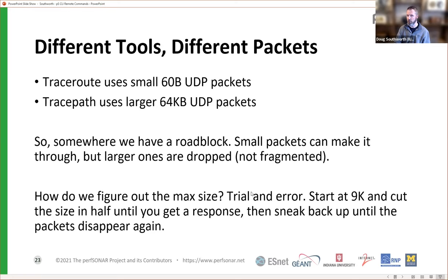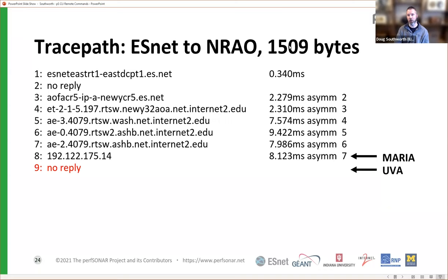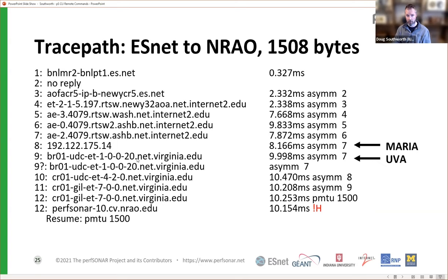How do we figure out where the breakdown is? Using trace path, you can specify the size of the packets you're sending — 64K is the default, but we can try lower and lower packet sizes to see what makes it through. We started at 9000: didn't work. Cut it in half to 4500 and so on. We start sneaking up on the number, and at 1509 we find that trace path still can't make it through, but at 1508, all of a sudden we can get all the way through to NRAO. So now we understand where in the path we have the problem and the maximum size we're currently able to push.